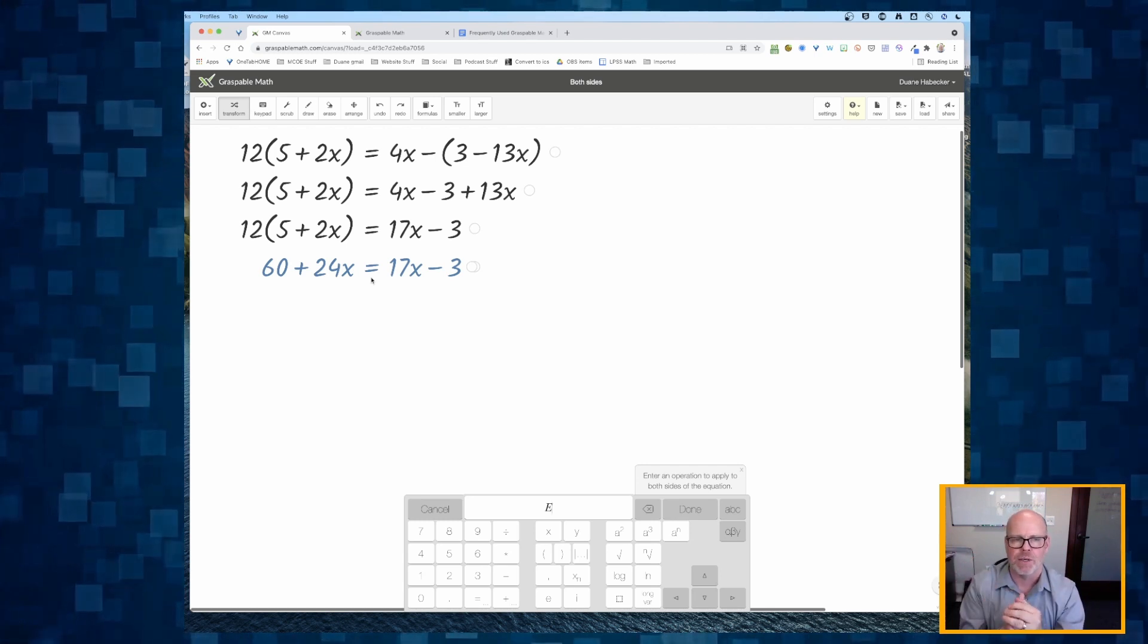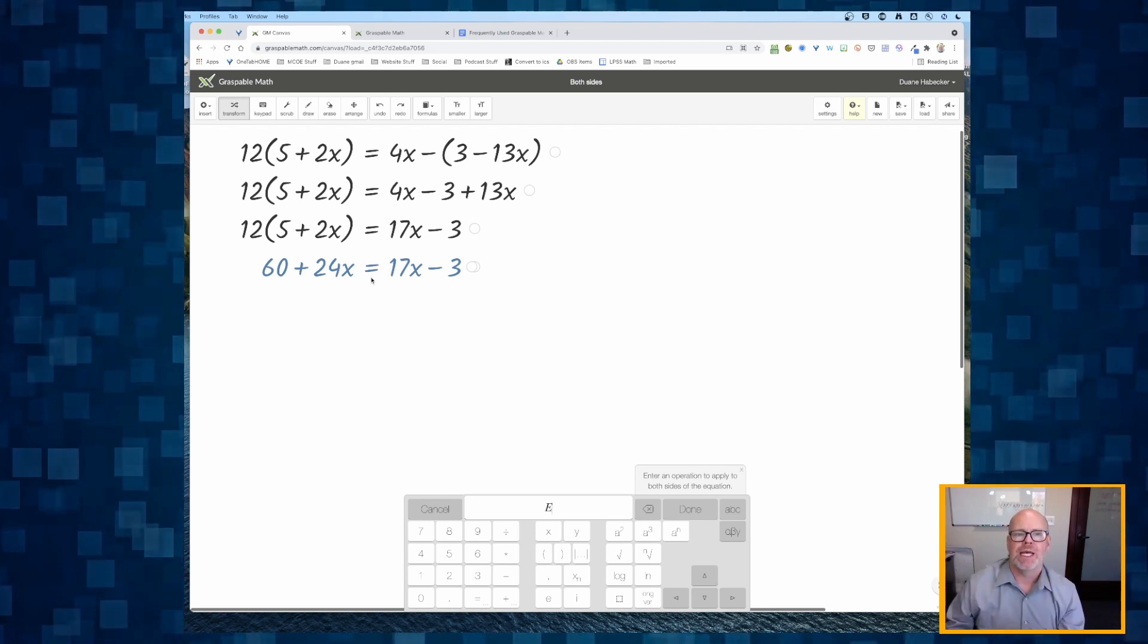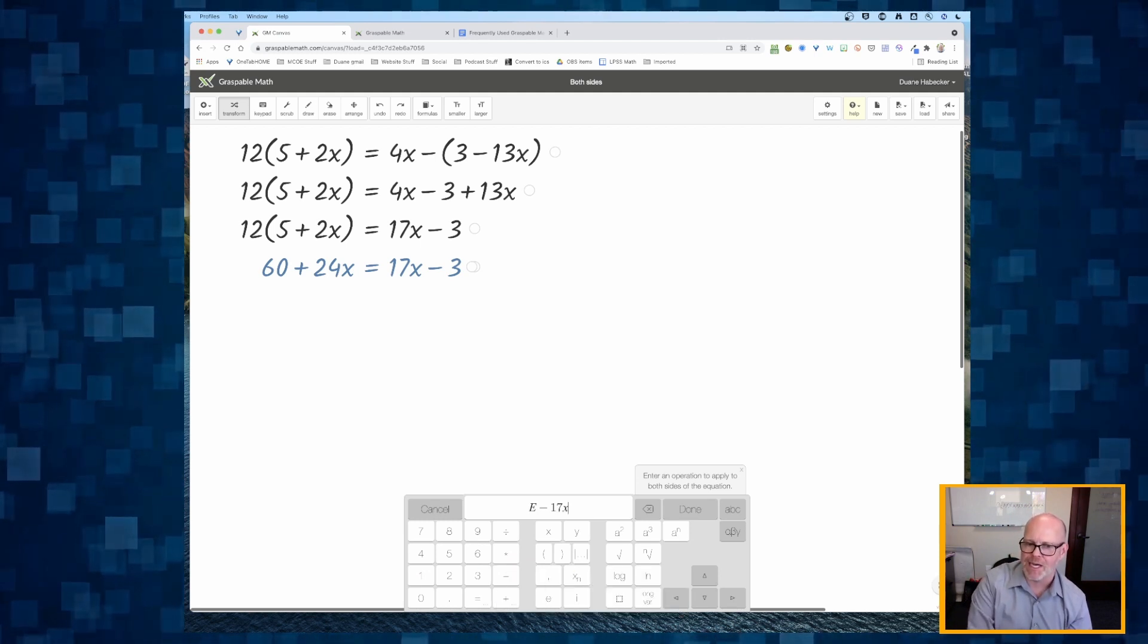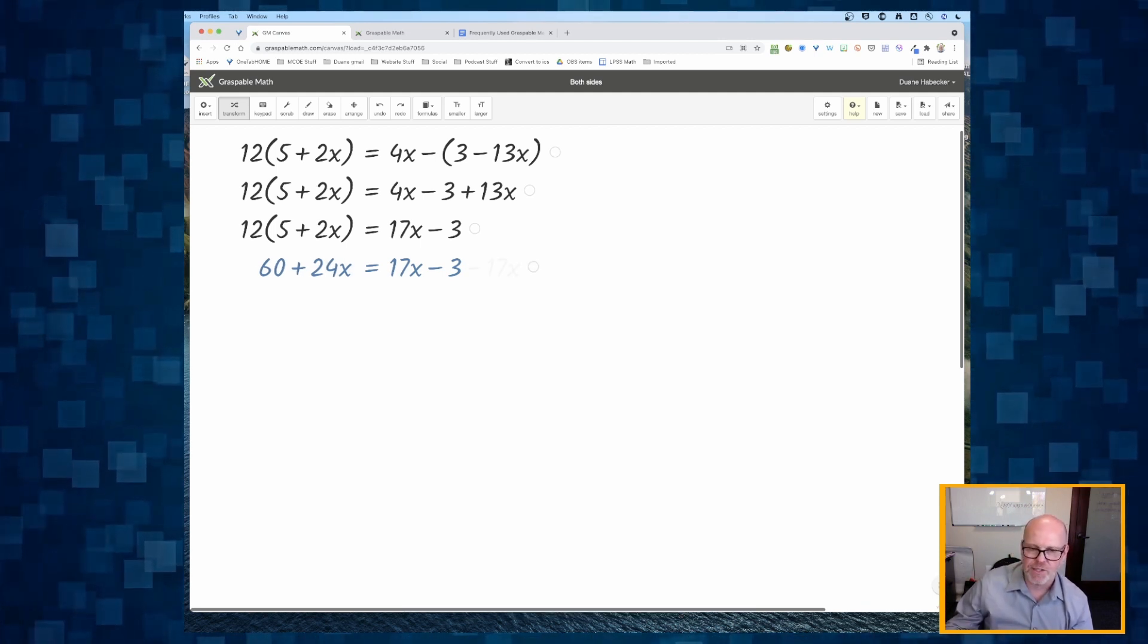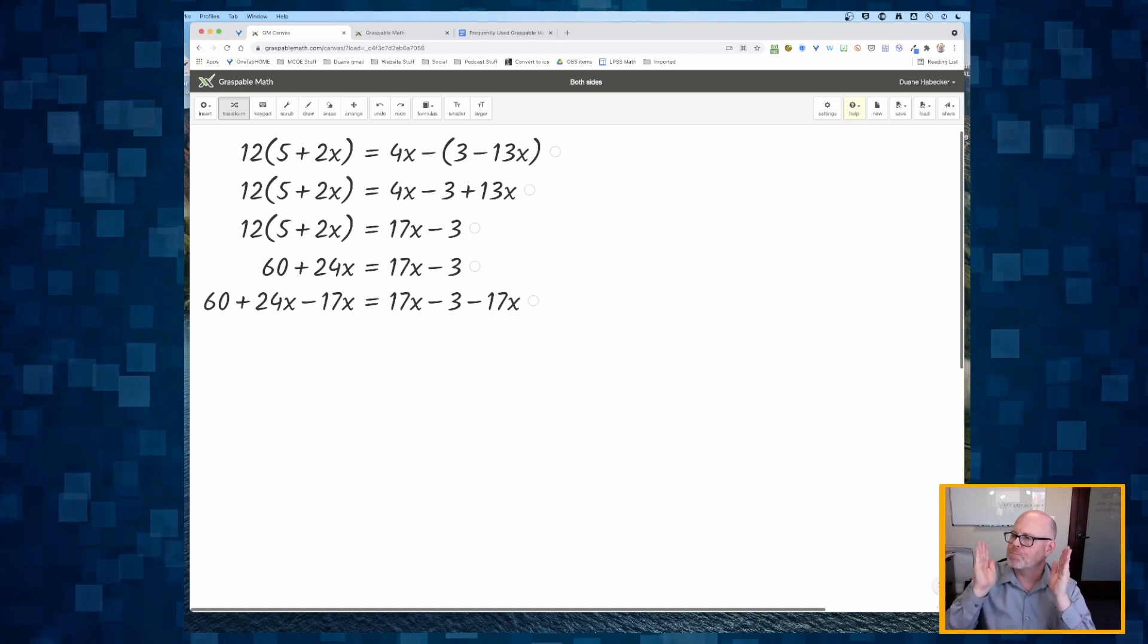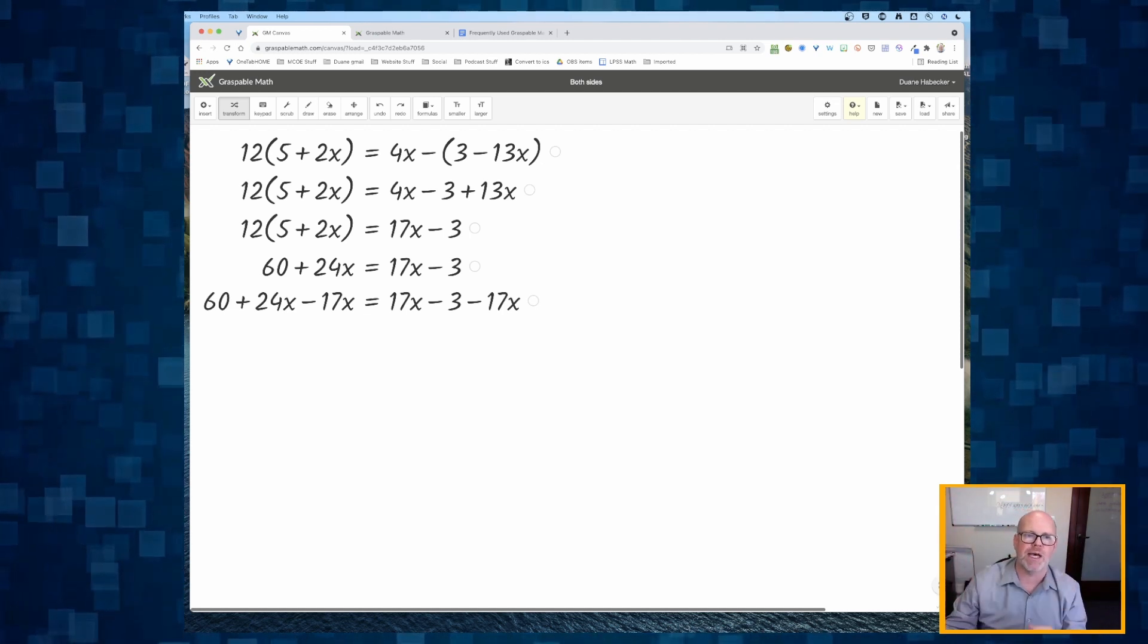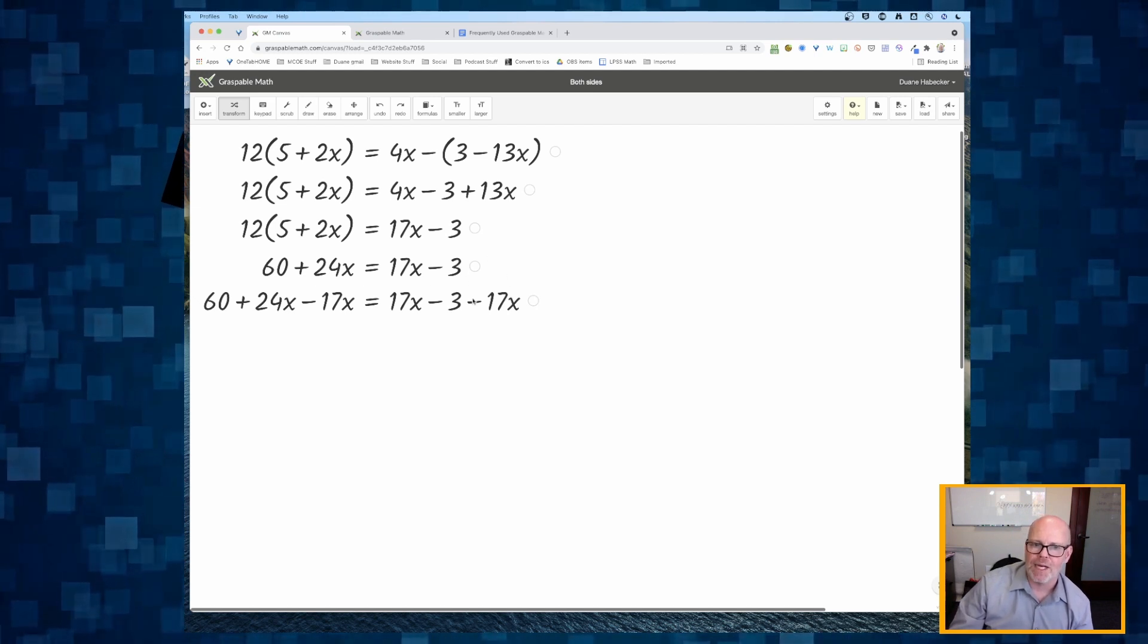That E stands for the equation. Well, what I want to do is I want to subtract 17x from both sides. And then I click the enter key and look at that. It puts a minus 17x on both sides of that equation.